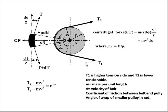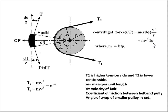Now we will see the centrifugal tension. Here we can see a pulley over which a belt is passing. As the belt has some mass, this mass will produce a centrifugal force in the outward direction. The magnitude of the centrifugal force is given by mass into acceleration, where M is the mass calculated by B into T into rho, the density of the belt per unit length, and V squared by R is the acceleration. So MV squared by R will be the small elemental centrifugal force acting on the belt in the outward direction.